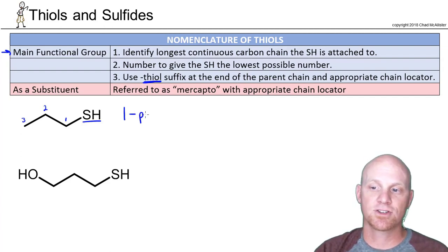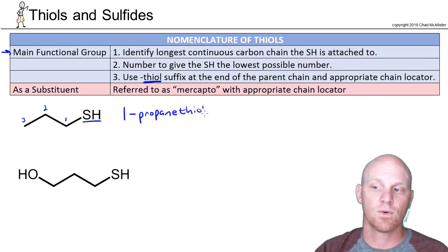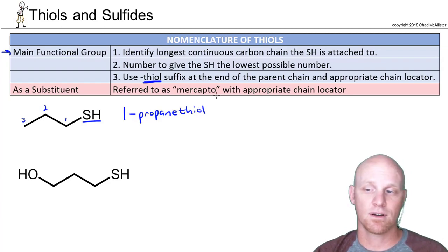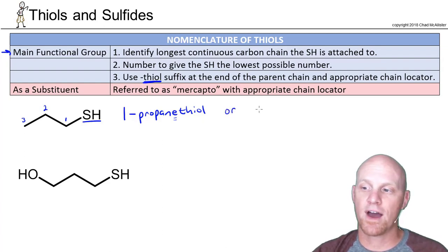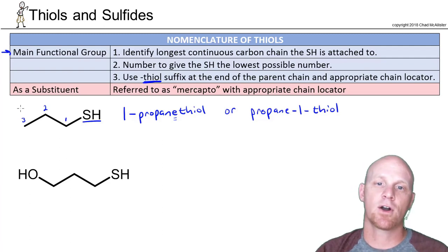So we'll say 1-propane — instead of saying 'propanol' like for an alcohol, we're going to say 'propanethiol.' But since 'thiol' begins with a consonant, we'll actually keep the E, which is exactly the opposite of what we'd do with an alcohol. With an alcohol, '-ol' starts with a vowel, so we drop the E. But with 'thiol' beginning with a consonant, we keep that E. So this is 1-propanethiol. You can also put the locant in the middle: propane-1-thiol. Both are acceptable.